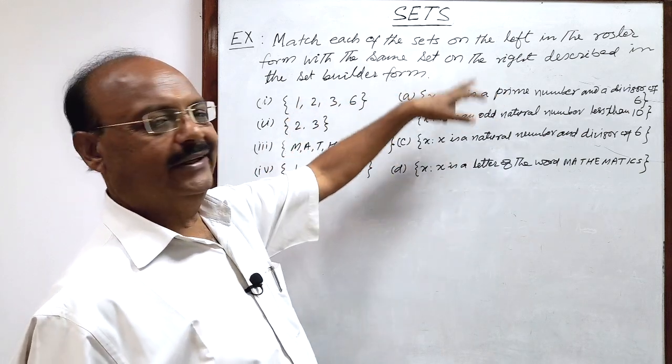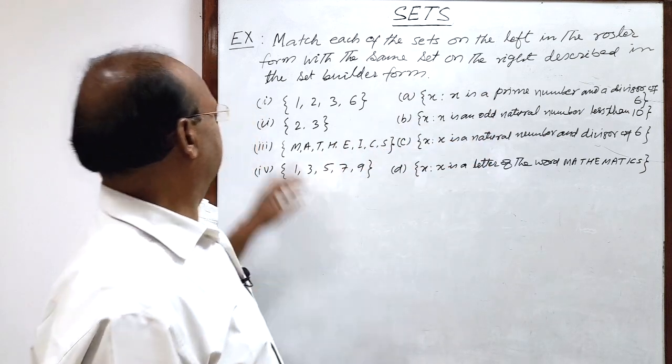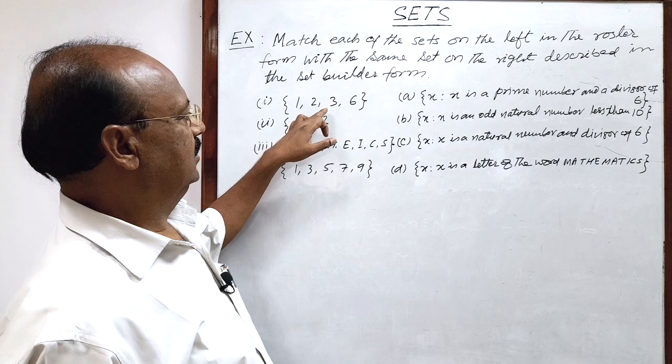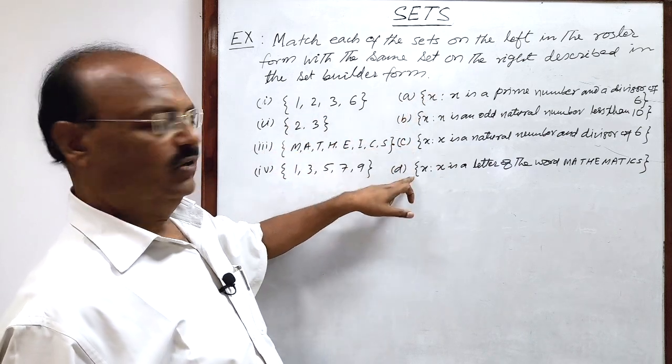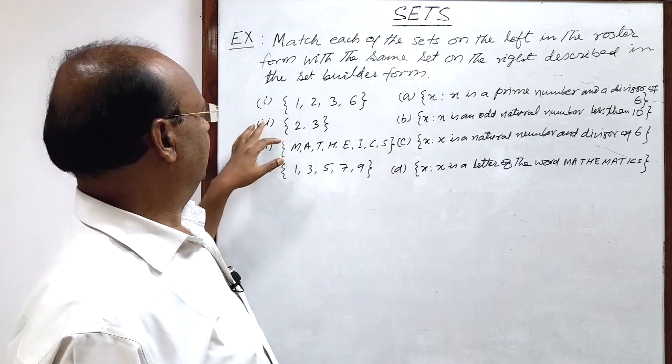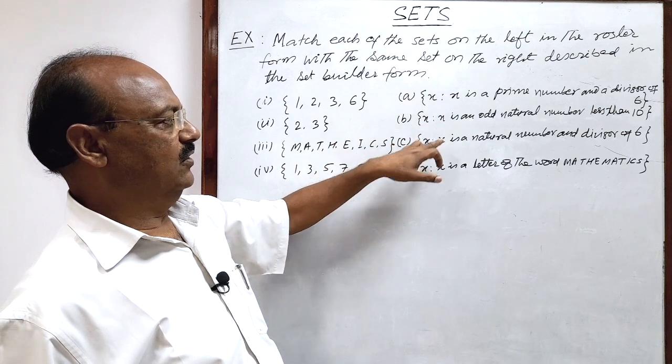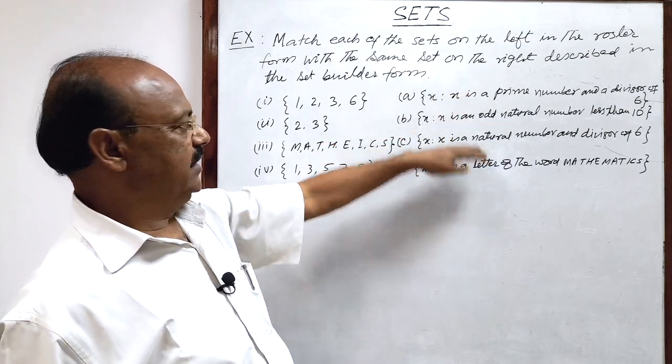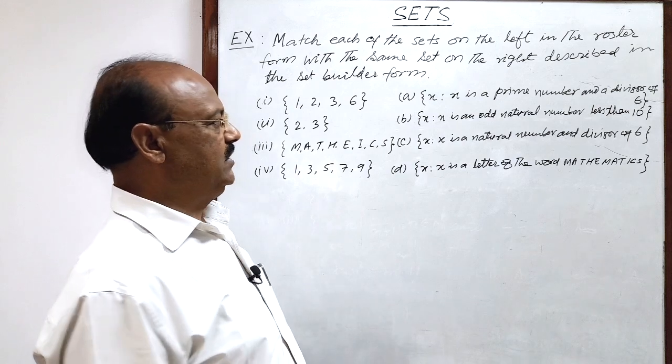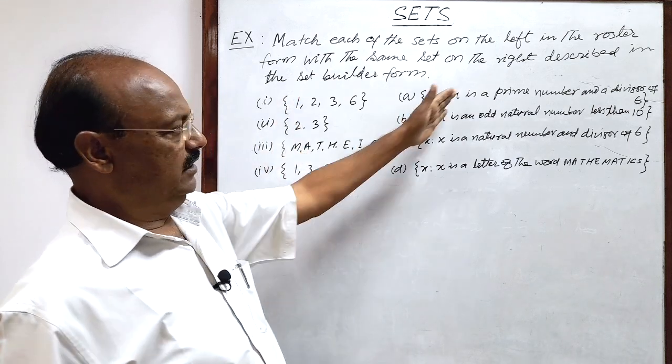These are written in set builder form. So we have to match that this first set matches with which one A or B or C or D. Accordingly we have to see that this set number 2 matches with which set A or B or C or D. So we have to check all these set builder form and we have to see that with which sets they are matching.